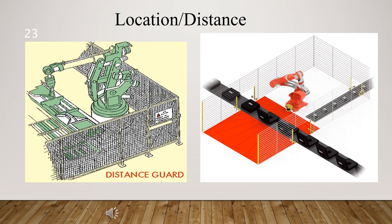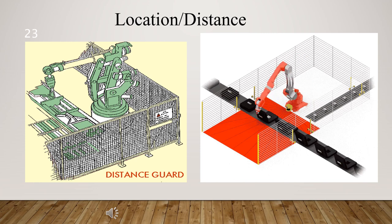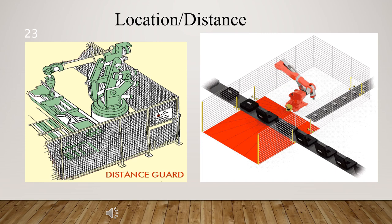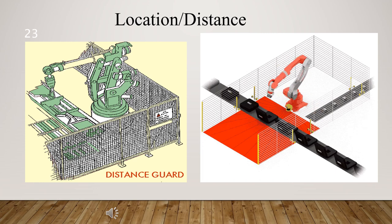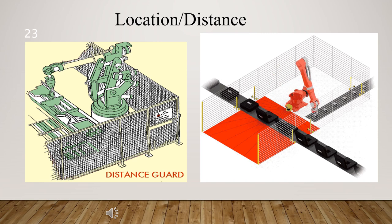In this part, we will discuss distance guards. Creating buffer zones around machinery can be an effective way to ensure there is sufficient distance between the machinery and workstations. This can be done using physical barriers like distance guards.